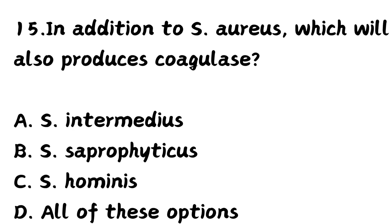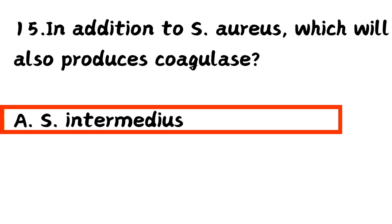Question number 15. In addition to Staph aureus, which will also produce coagulase? Option A, Staph intermedius. Option B, Staph saprophyticus. Option C, Staph hominis. Option D, all of these options. The right answer is Option A, Staphylococcus intermedius.